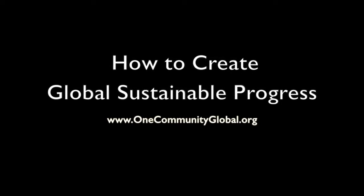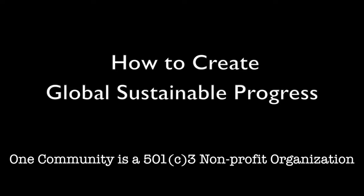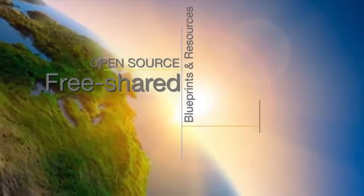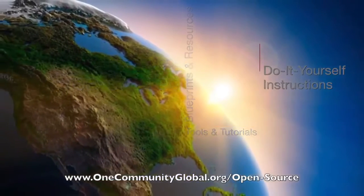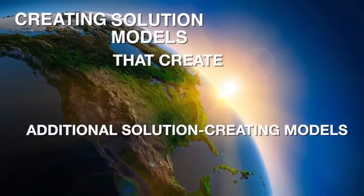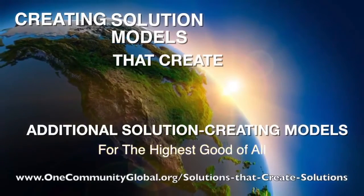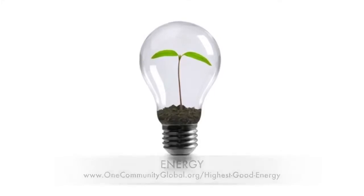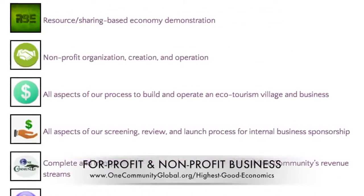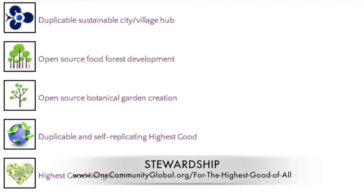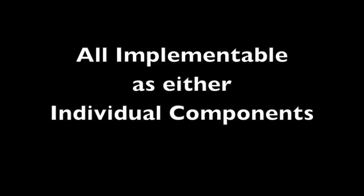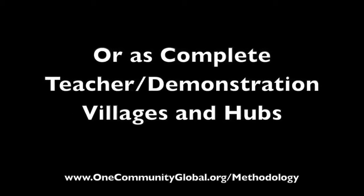How to Create Global Sustainable Progress — One Community Weekly Progress Update Number 146. One Community is a 501c3 nonprofit organization creating open-source and free shared blueprints, resources, tools, tutorials, and do-it-yourself instructions for highest good living. We create solution models that generate additional solution-creating models in the service of all life on this planet, covering food, energy, housing, education, for-profit and non-profit business creation, society, and true earth stewardship — implementable as individual components or as complete teacher demonstration villages and hubs.